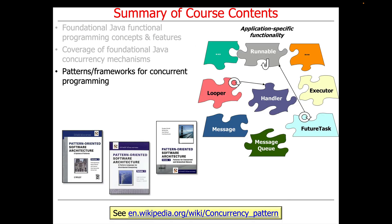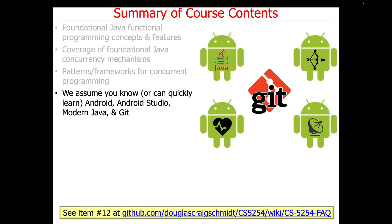We'll also talk quite a bit about patterns and frameworks that are developed and applied for concurrent programming. I've done lots of work on software patterns for the past three decades, and we'll be seeing some examples of that throughout the material as well. I make an assumption that you either know or can quickly learn the parts of Android, Android Studio, so-called modern Java (the functional features of Java), as well as the Git source code revision control library. If you have questions or need a refresher, please see item 12 at the course FAQ available at the link at the bottom of the slide.